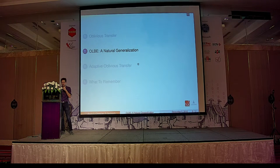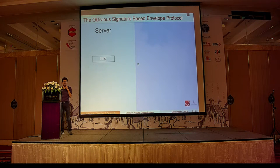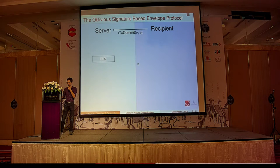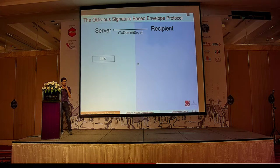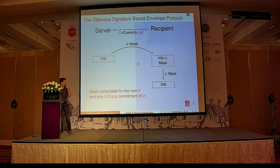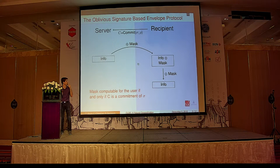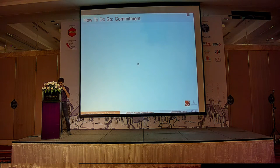Now let's talk about an existing protocol called Oblivious Signature-Based Envelope (OSBE). It's a two-party protocol where the server owns some information and a recipient wants to access this information — but only if he knows a signature sigma. The recipient commits to sigma, the server masks the information, and the recipient can unmask it if and only if the commitment c was a commitment of sigma. The server never knows whether the recipient sent a real commitment of sigma.